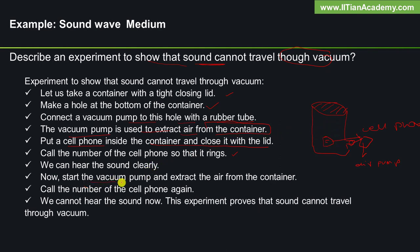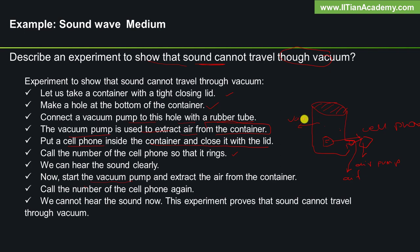Now start the vacuum pump and extract the air from the container. Call the number of the cell phone again. We cannot hear the sound now. This experiment proves that sound cannot travel through vacuum.